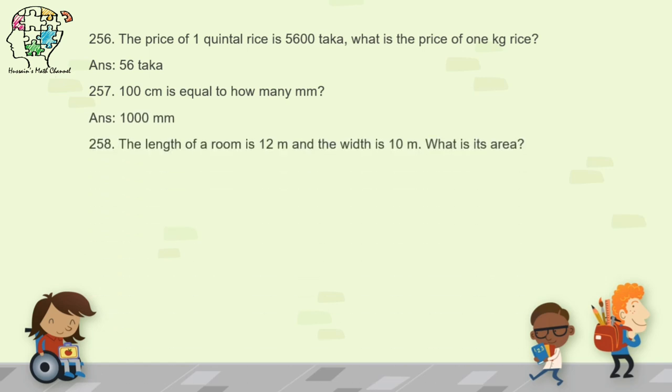Question 258: the length of a room is 12 meters and the width is 10 meters — what is the area? Multiply 10 and 12 to get 120 square meters.